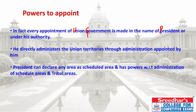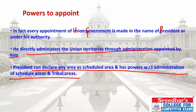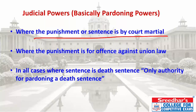The President also appoints SC/ST Commissioners, party chairmen, and other members. All Union Government appointments are made in the name of the President. For example, any newly recruited or newly appointed officer receives their appointment letter in the name of the President. The President also administers Union Territories and has the authority to declare Scheduled Areas and Tribal Areas.